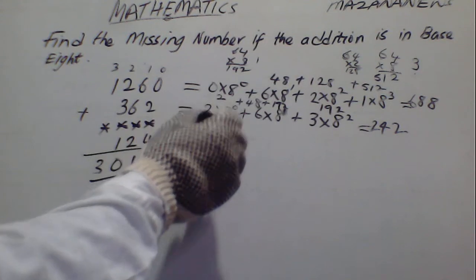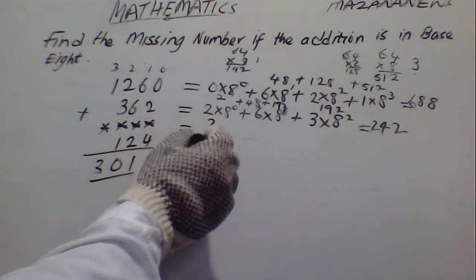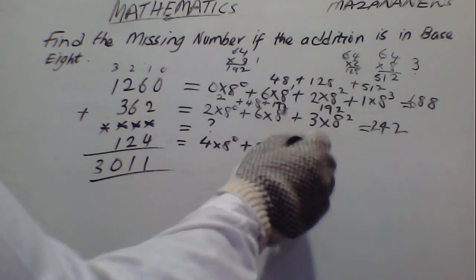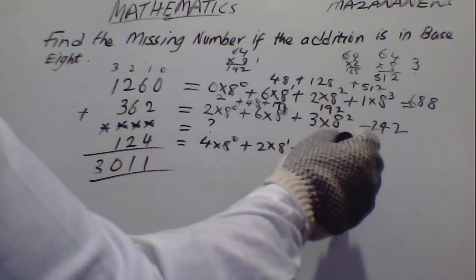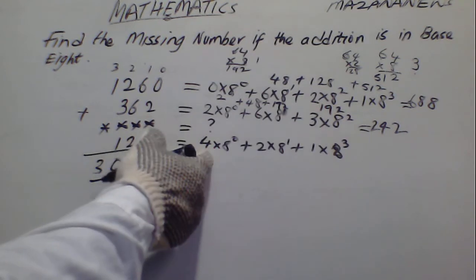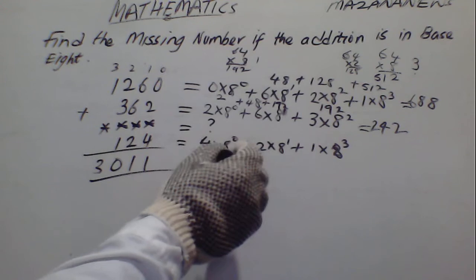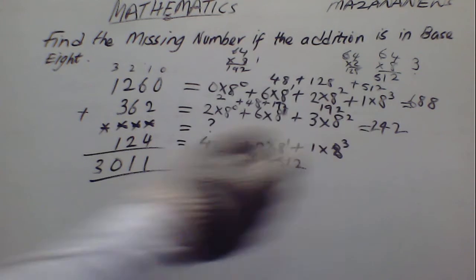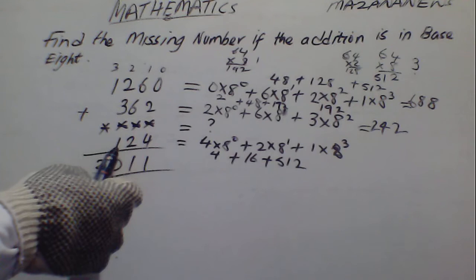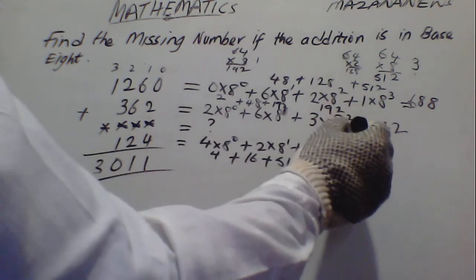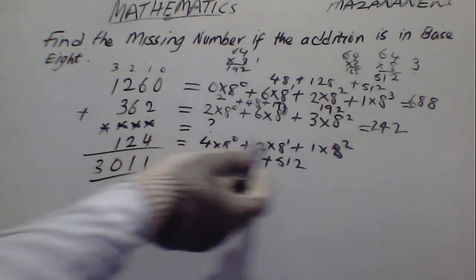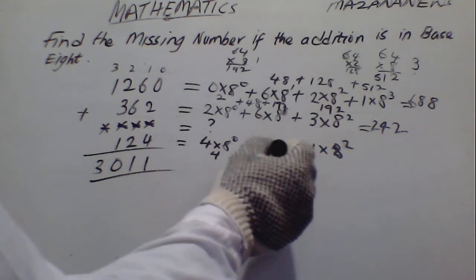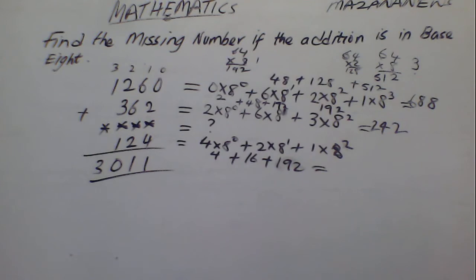So here we never know the value — you can put it like this. We have 4 times 8 raised to power 0, 2 times 8 raised to power 1, 1 times 2 times 8 raised to power 3. So from here we have 4 plus 16, plus 512 — we have solved it before. Here is 0, here is 1, here is 2. So from here we have 192.